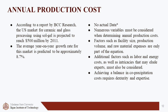According to a report by BCC Research, the US market for sol-gel processing in ceramics and glass is expected to reach $500 million by 2011, growing at an average rate of 8.7% per year. By 2023, sol-gel processing in ceramics and glass is estimated to become a billion-dollar industry. Sol-gel processing is a popular method for creating glass shapes because it can produce anything from simple to very complex designs. As for the co-precipitation method, specific market numbers are not available, but the yearly cost involves many factors including the size of the facility, production volume, cost of raw materials, labor, energy costs, and other details.